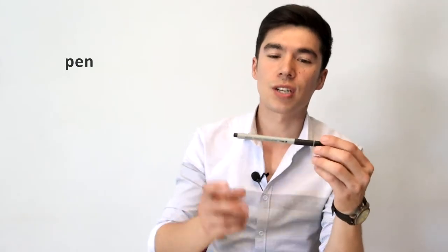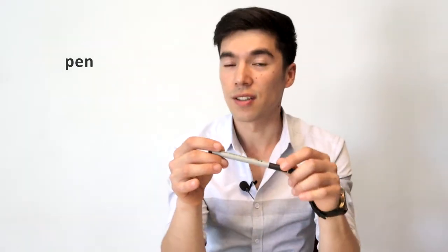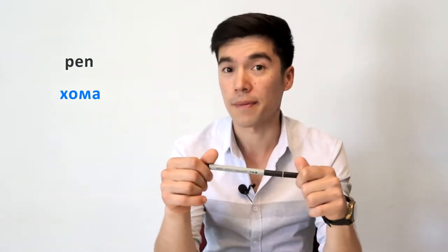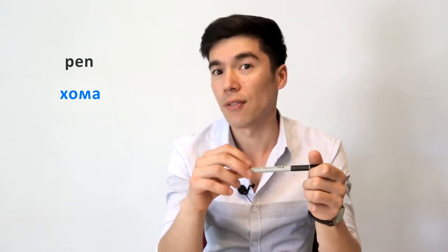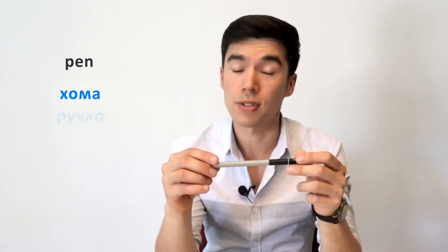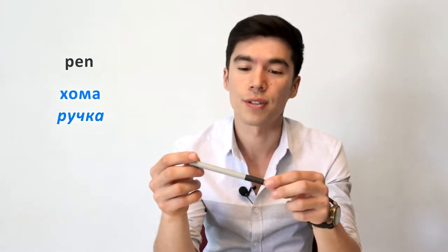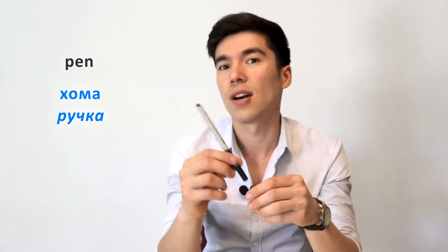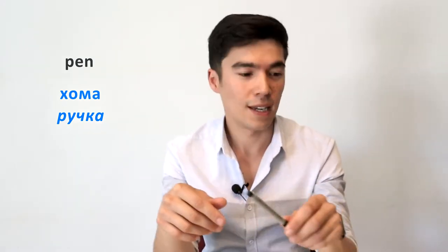And next, 'pen'. In Tajik, the formal word is ХОМА, but I've never heard anyone saying ХОМА. Usually people say РУЧКА — it's a Russian word. So ХОМА is formal, РУЧКА is informal.